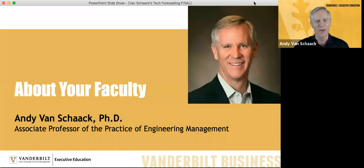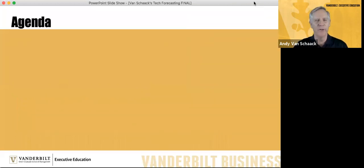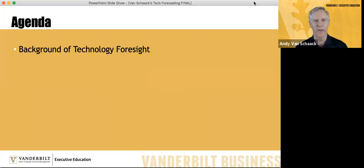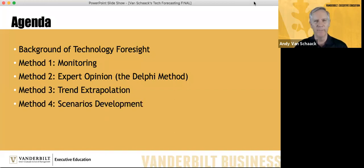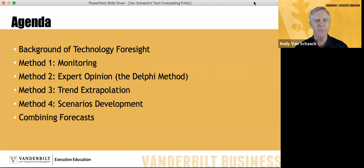Thanks, Dave, for that very generous introduction. I'm really excited to be here. What I thought we'd do is start off with a little bit of information about what technology foresight is — what is this field of technology forecasting? As promised in the invitation, we're going to be covering four methods for technology forecasting: monitoring, expert opinion and specifically the Delphi method, trend extrapolation, and finally scenario development. At the end, I'll wrap them up and talk about how we can combine these methods for using quantitative and qualitative information to make predictions about the future and prepare ourselves for it.